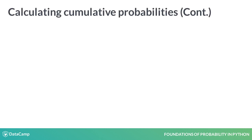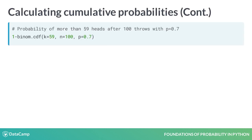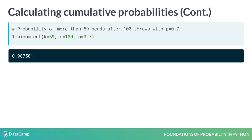The probability of getting heads 50 times or fewer from 100 flips of a biased coin with p equals 70% is 99% — again, it's almost certain. What if we want the probability of getting heads more than k times? This is called the complement, and we get it by subtracting the CDF from 1.